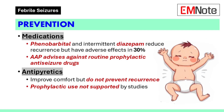Continuous treatment with phenobarbital and intermittent treatment with diazepam can reduce febrile seizure recurrence but have adverse effects in up to 30% of cases. The American Academy of Pediatrics advises against routine prophylactic anti-seizure medication. Antipyretics may improve comfort but do not prevent febrile seizures; studies evaluating prophylactic antipyretics have not supported their use in preventing recurrence.